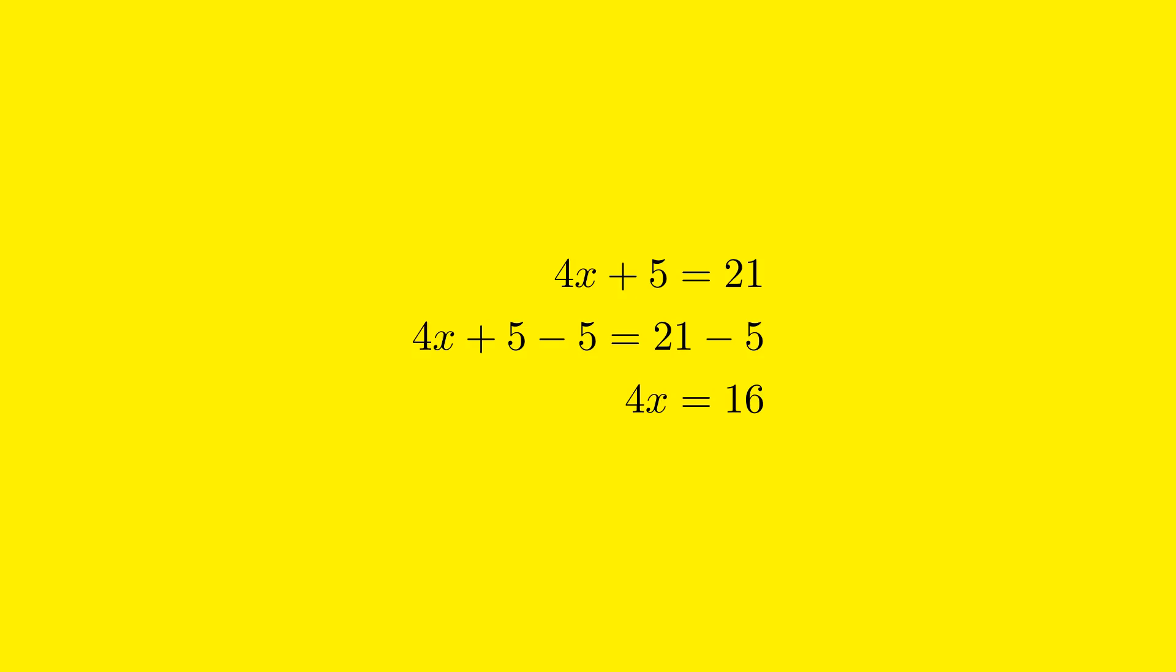Step 1: To begin solving the equation 4x + 5 = 21, we want to isolate the variable x. In this equation, x is currently being multiplied by 4, and then 5 is being added to the product. To start separating x, we first need to remove the 5 that is added to 4x. We do this by performing the opposite of addition, which is subtraction.